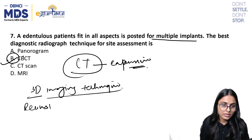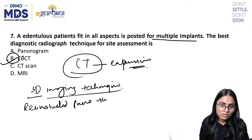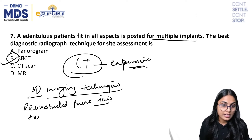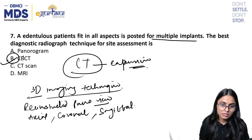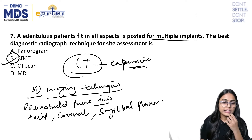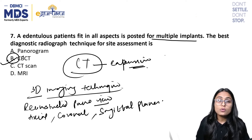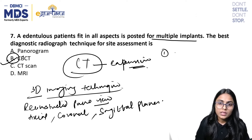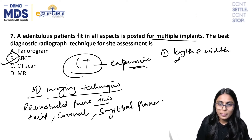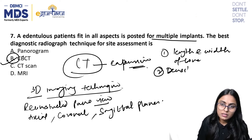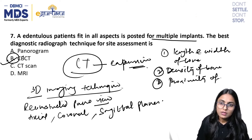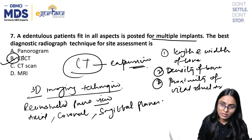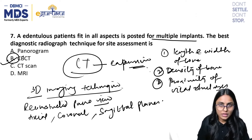CBCT is a 3D imaging technique. When you get a CBCT done, you can obtain a reconstructed panoramic view — equivalent to an OPG view — and images in all three planes: axial, coronal, and sagittal. Advantages of CBCT for implants include: length and width of the bone, density of bone, and proximity of vital structures from the crest.